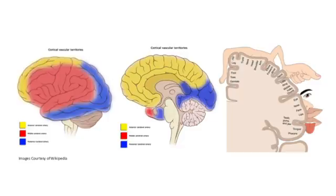I'll focus on the three key ones that I think are really important. These include the anterior cerebral artery, the middle cerebral artery, and the posterior cerebral artery. As you can imagine, the different arteries and branches of these arteries supply various regions of the brain. The anterior cerebral artery, for example, supplies the middle interior part of the brain and somewhat the middle slightly outer portions of the brain.